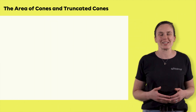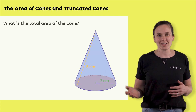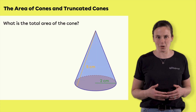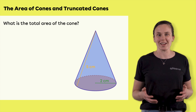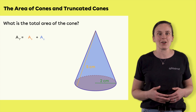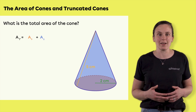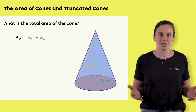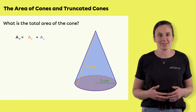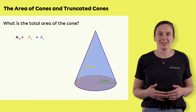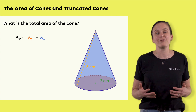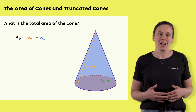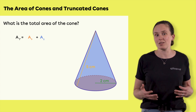Let's look at a first example together. You are asked to find the total area of the cone. Since the total area is equal to the area of the base plus the lateral area, you can proceed in three steps: first calculate the area of the base, then calculate the lateral area, and finally calculate the total area. Otherwise, you can do the math in one step.